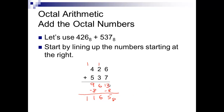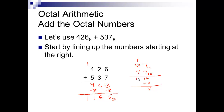Believe it or not, this subtract-the-base method works with regular decimal numbers too. For example, 87 plus 47 in base 10: 7 plus 7 is 14 — 14 is base or larger, so subtract 10, leaving 4, carry a 1. Then 8 plus 1 plus 4 is 13 — 13 minus 10 equals 3, carry a 1, which gives 1. So you see it works on regular decimal numbers too.